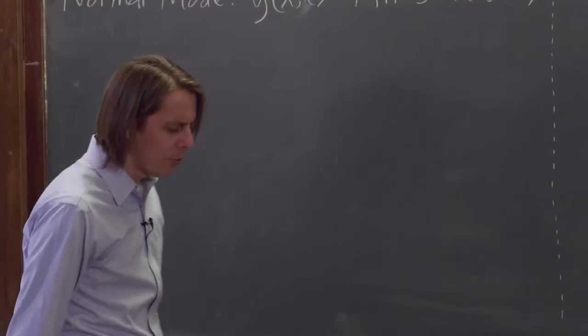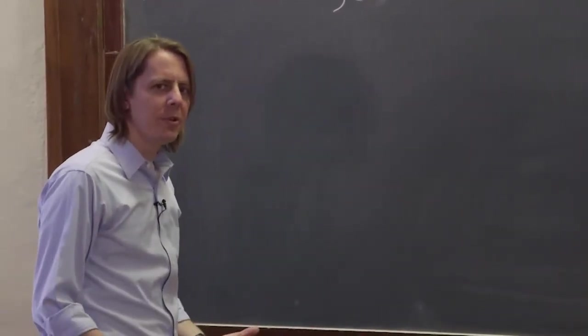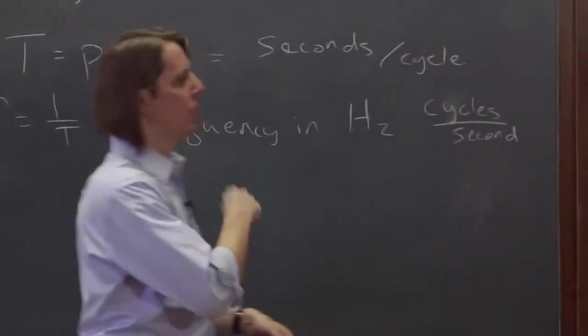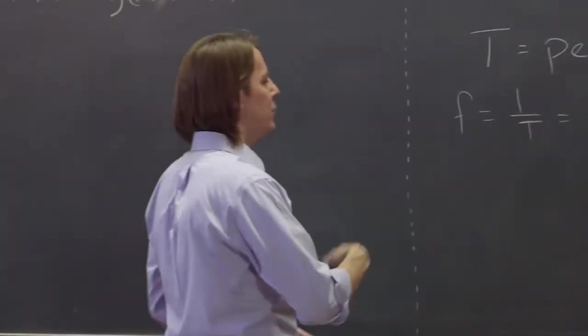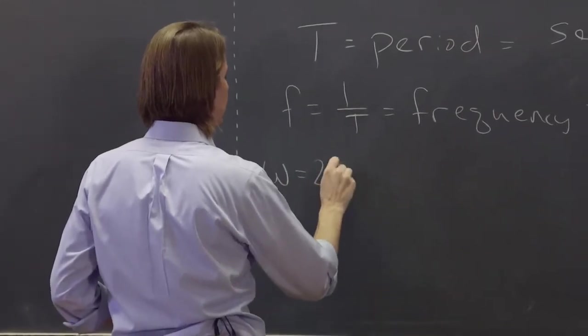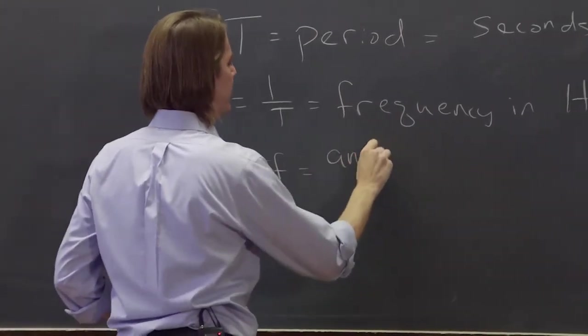And then, once you get to slightly more grown-up physics, you eventually accept the angular frequency. You realize we don't care about cycles, we care about radians. We keep up with a cycle as 2π radians, and you begin to accept omega as 2πf as the angular frequency.